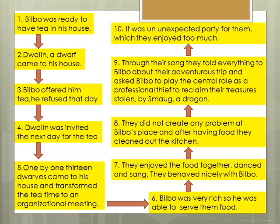They enjoyed the food together — they danced, they sang, they behaved nicely with Bilbo and did not create any problem at his place. After having food, they cleaned out the kitchen. Through their song, they told everything to Bilbo about their adventurous trip and asked Bilbo to play the central role as a professional thief to reclaim their treasures, which were stolen by a smoke-eyed dragon.